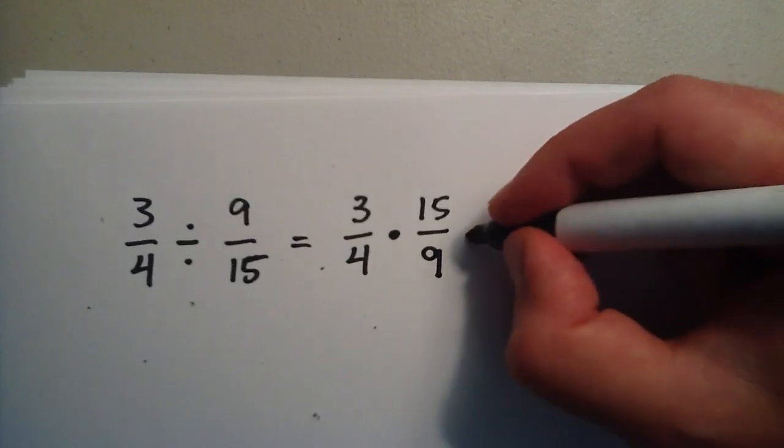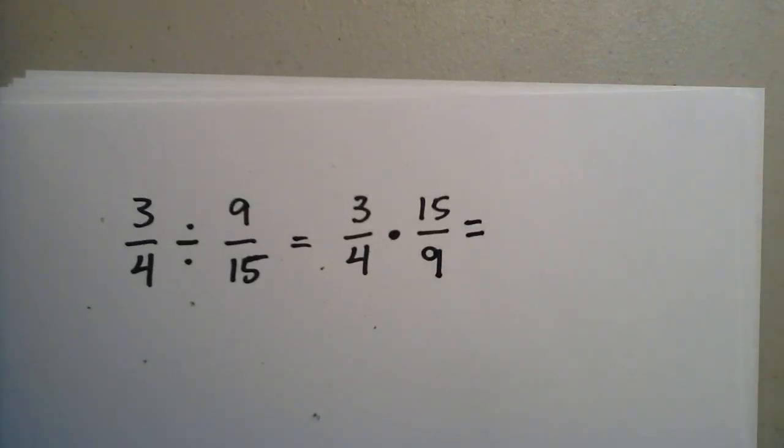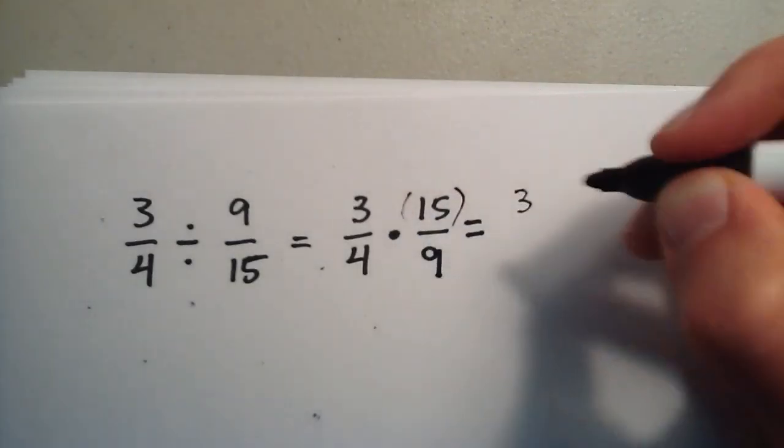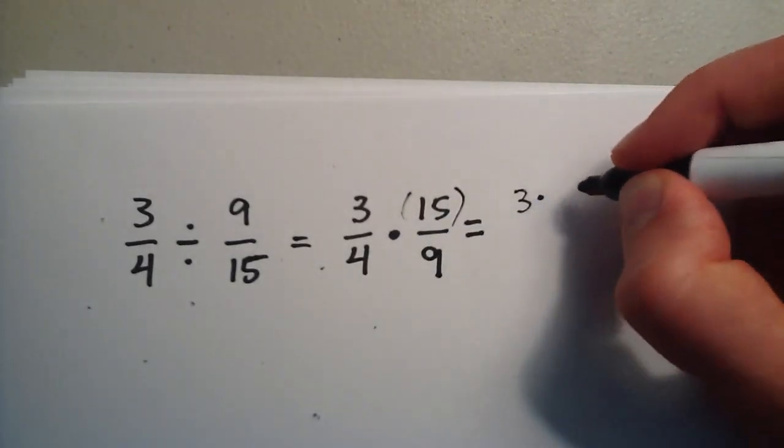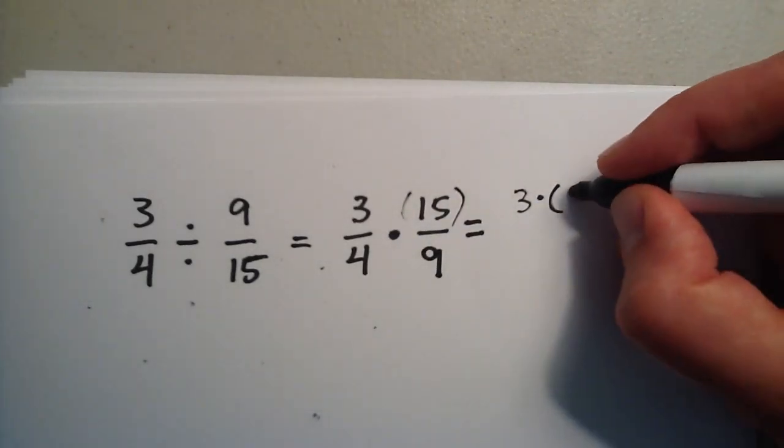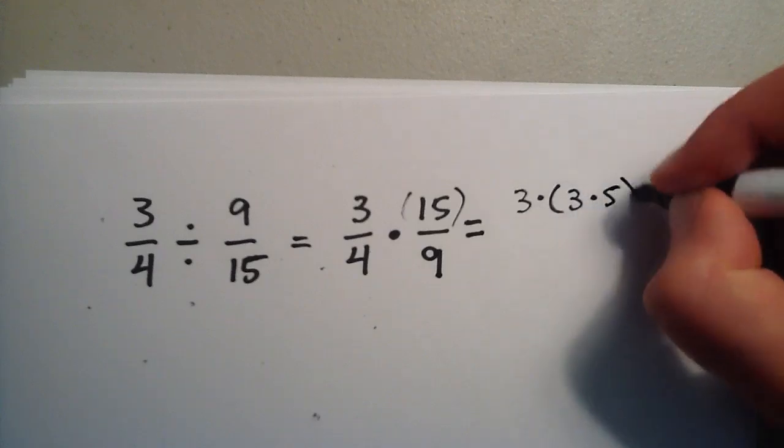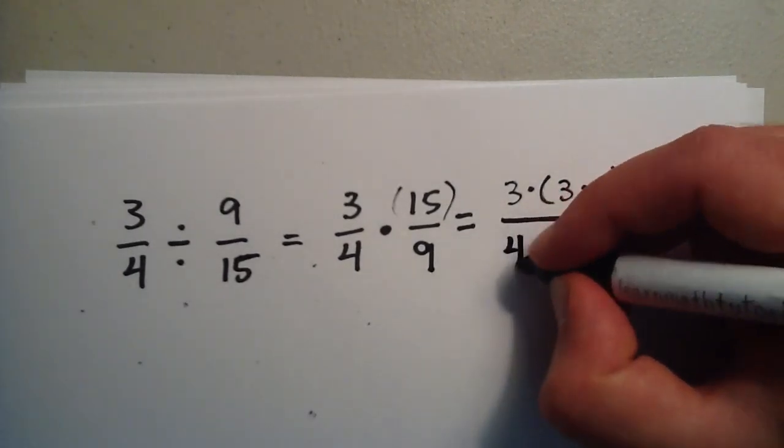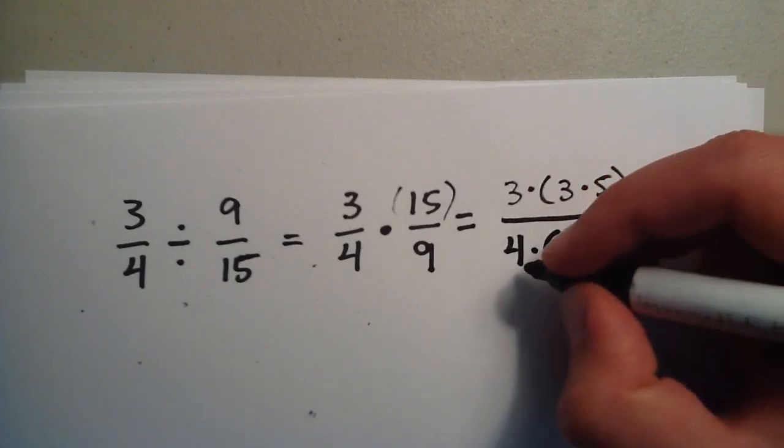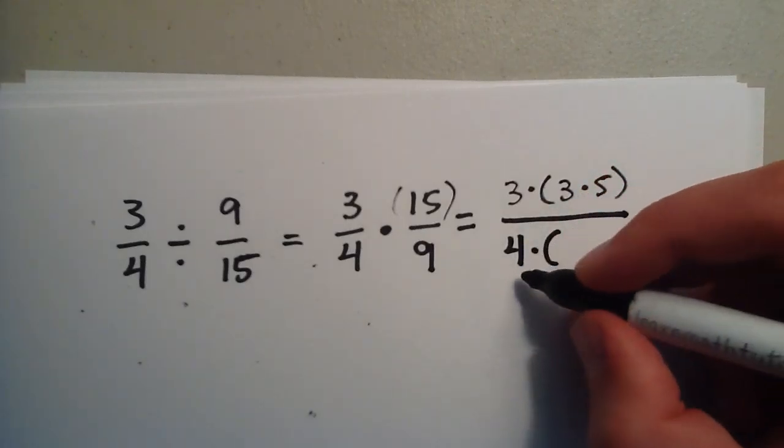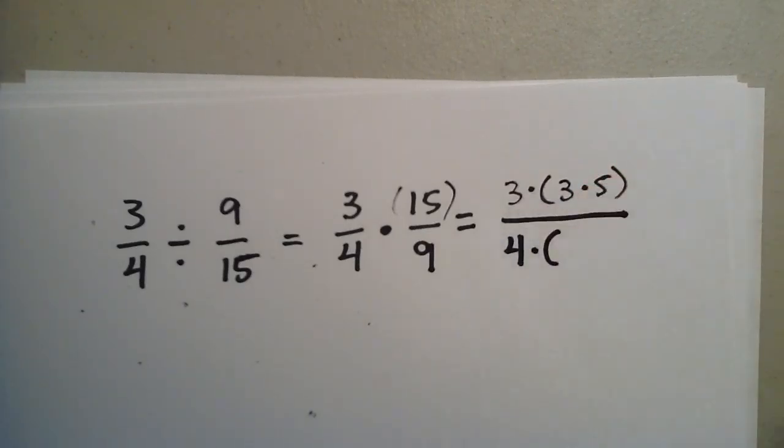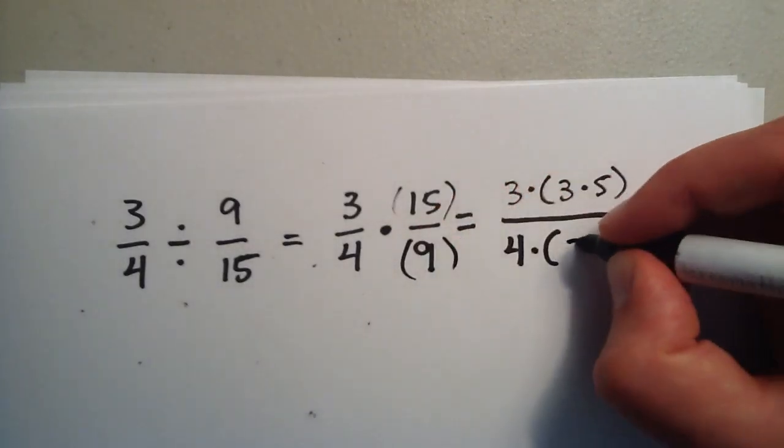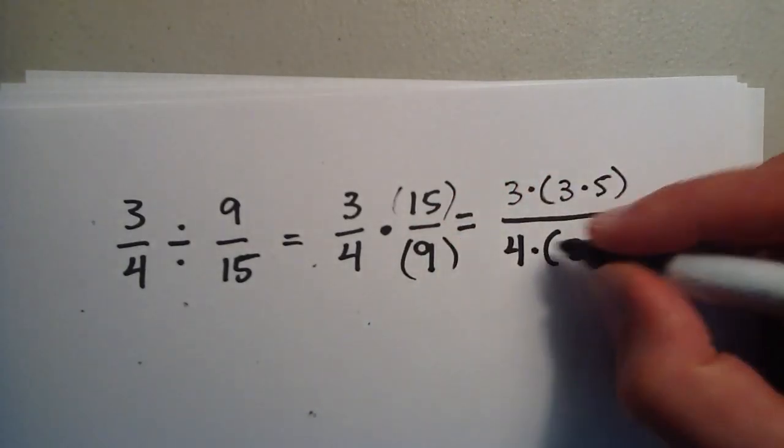Now from here we can just treat it as a regular multiplication problem. And we can break 15 into components here. So 3 times 15 is the same thing as 3 times 3 times 5. Now we're just going to go ahead and leave the 4 the same. You could break it down if you want, but you'll see that if you do that, that nothing will cancel. And we're going to break the 9 into 3 and 3. 3 times 3 is 9.